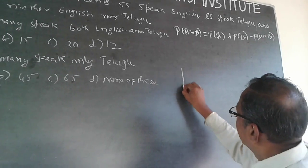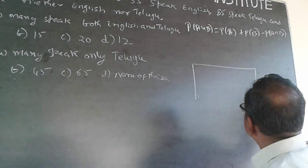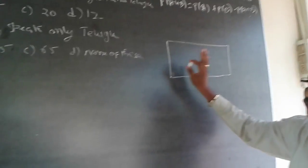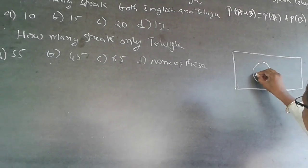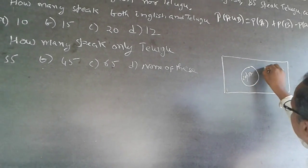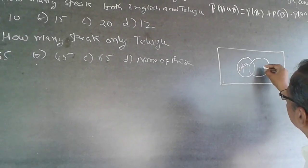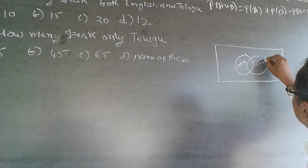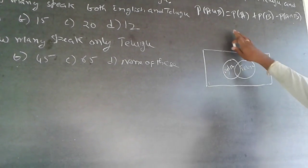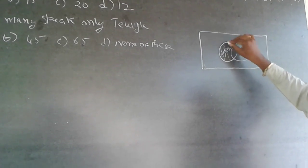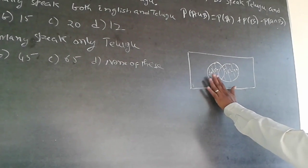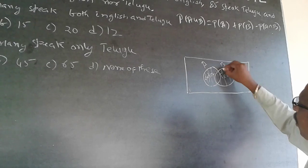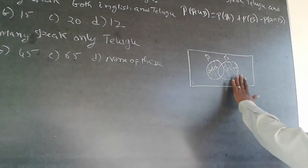In this box, 150 people are there. This circle represents English and this one represents Telugu. All those coming into either circle — counted once — will fall under A union B. If we take this as A and this as B, all those appearing in either region once constitute A union B.